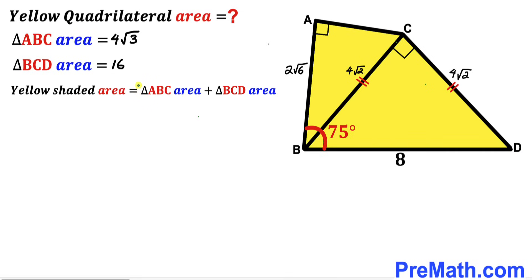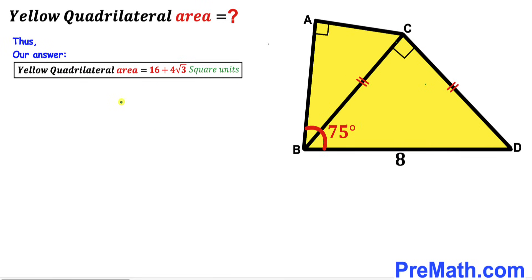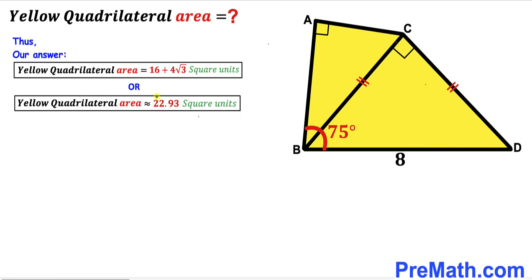Here's our final step. The area of the yellow shaded quadrilateral ABCD equals area of triangle ABC plus area of triangle BCD, which is 4√3 + 16. So the yellow shaded quadrilateral ABCD area turns out to be 16 + 4√3 square units, which is approximately equal to 22.93 square units. That's our final answer.